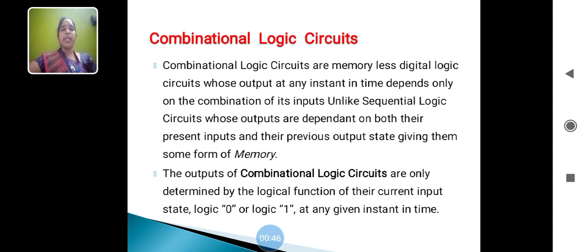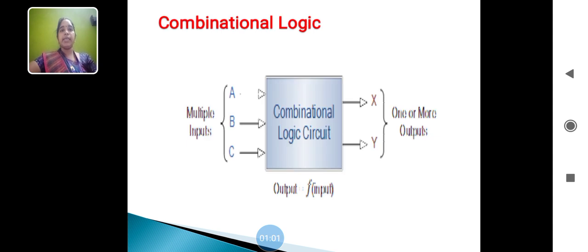The outputs of Combinational Logical Circuits are only determined by the logical functions of their current input state, logic 0 or logic 1, at any given instant in time.